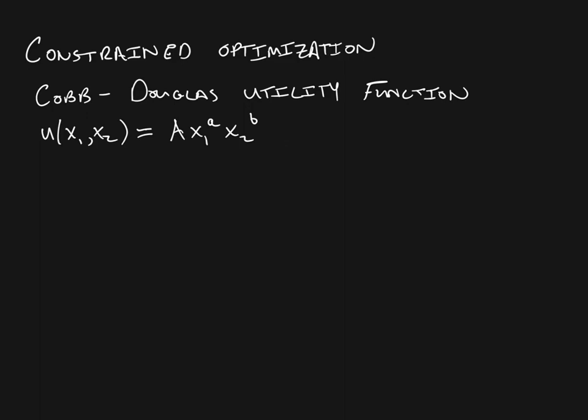A Cobb-Douglas utility function is any kind of utility function that takes this form, namely that the utility, which depends on how much of good one we consume and how much of good two we consume, is going to be some multiplication of the amounts of good one and good two, possibly scaled by some factor A and possibly raised to some exponents a and B. Any kind of utility function that takes this form is Cobb-Douglas.